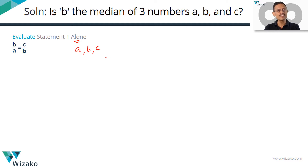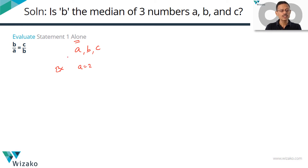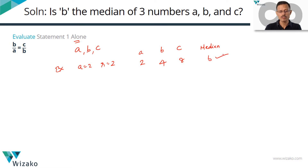If three terms are in GP, which number is going to be the median — the middle value? Let's look for a counter-example. Let's take A = 2 and common ratio R = 2. Then B = 4 and C = 8. The median is 4, which happens to be B. So we found an example where B is the median. Now, to show this statement is not sufficient, we need a counter-example.